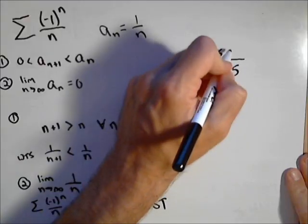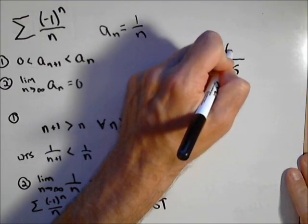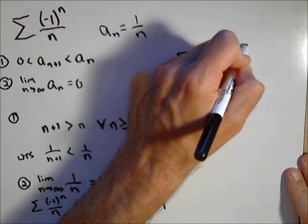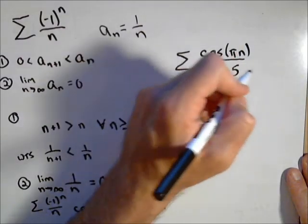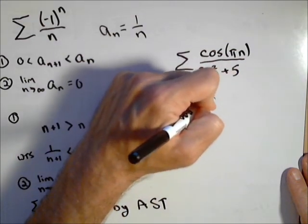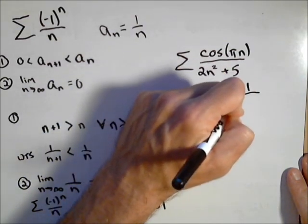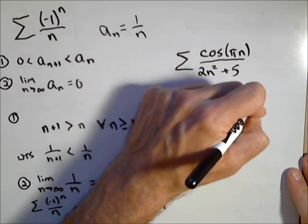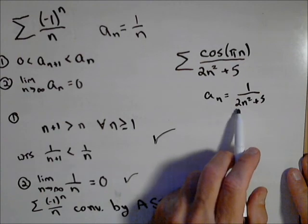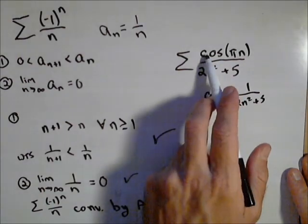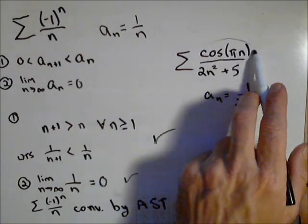Now contrast that with cosine of pi n. This is an alternating series and a sub n for this one is one over two n squared plus five. And it's not too hard to show these two parts for a sub n here. This makes it alternating. This is the piece that makes it alternating here.